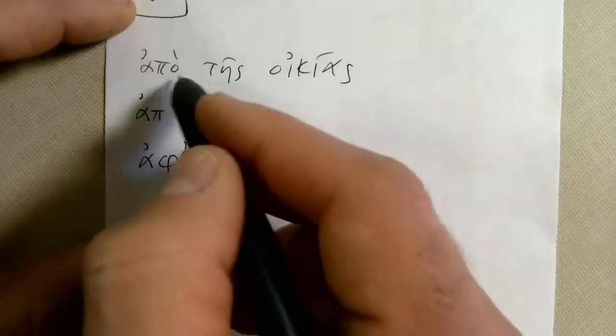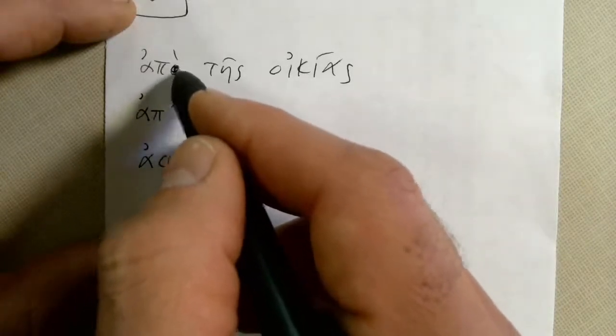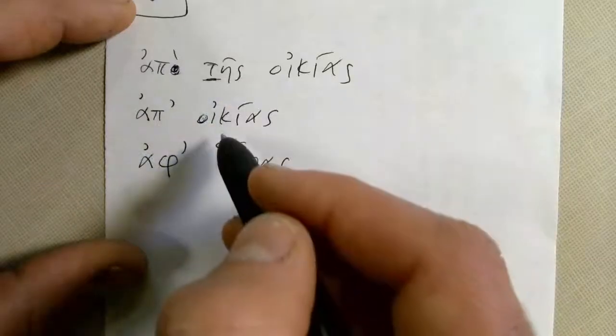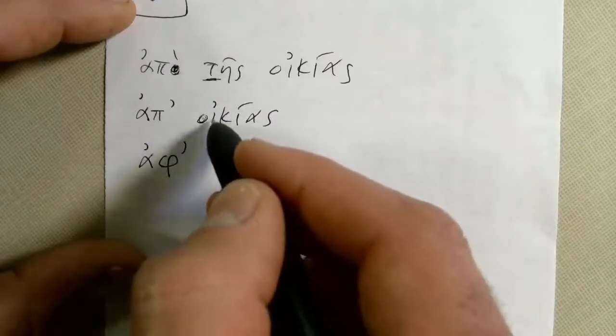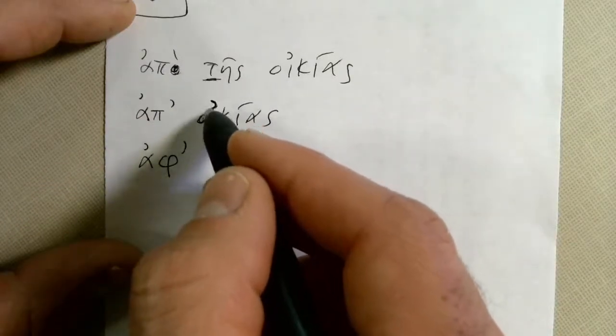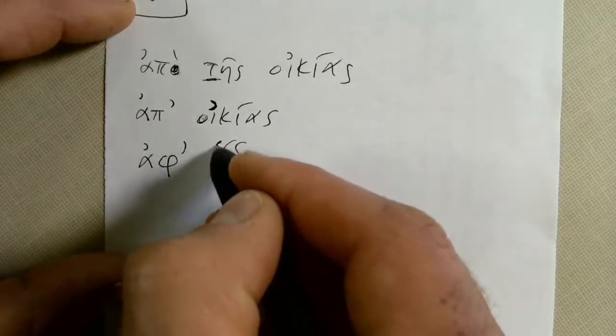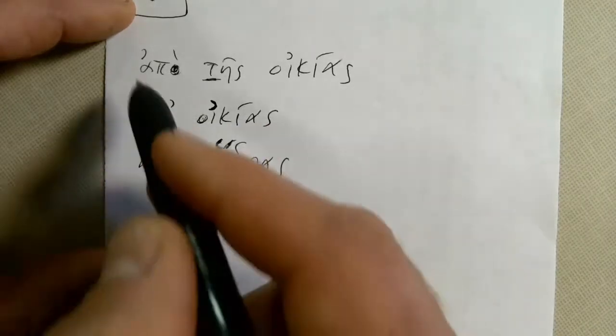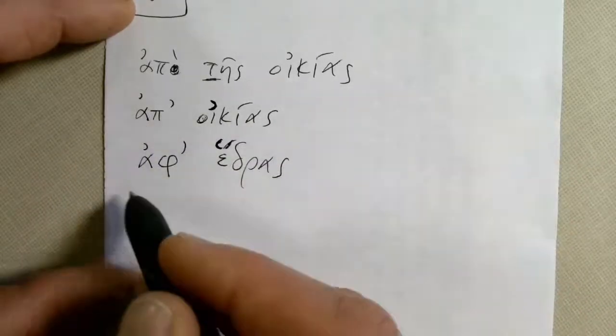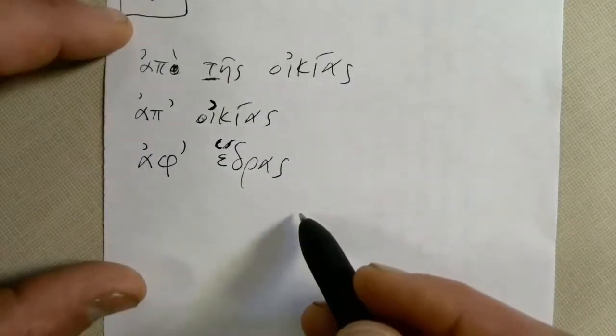Here is the rules. APO is what you use when this is a consonant. AP is what you use when you have a smooth breathing mark. AF is what you use when you have a rough breathing mark. So we have APOTIS IQUIAS, APICIAS, and AFEDRAS.